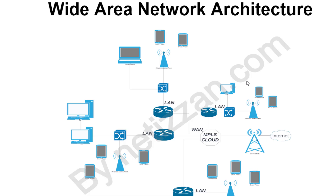As you can see here, this architecture has different components. We have an internet source, we have a base transceiver — that is, a base station — and then we have different routers. A Wide Area Network interconnects different local area networks. As you can see here, we have up to four different local area networks and up to four routers: router one, router two, router three, and router four. After that, we have switches, and we also have end user devices.